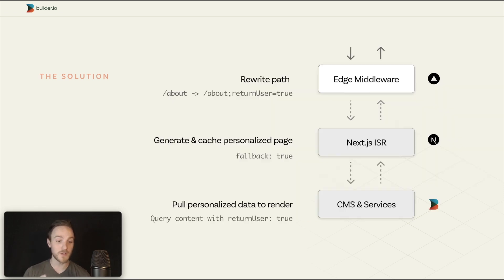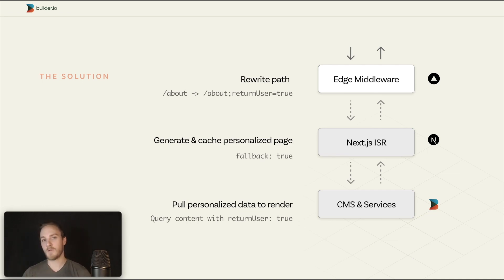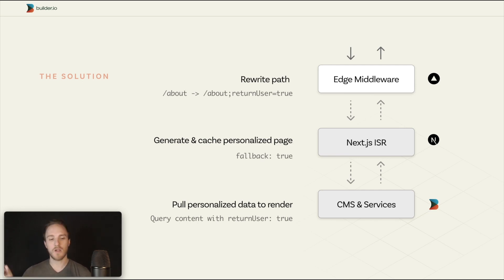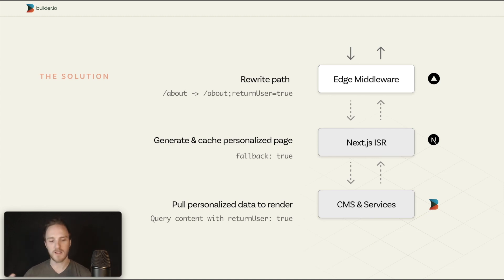So how does this work? Under the hood, the Edge Middleware is rewriting requests. So if we see a URL — somebody coming into your homepage or an about page — we're going to look at the cookies and say: is there personalized information we know about this visitor? You can set these cookies or our SDKs can.